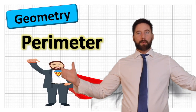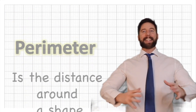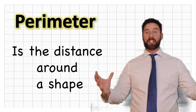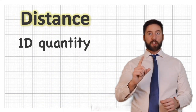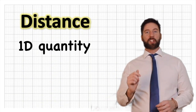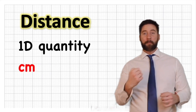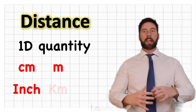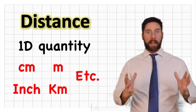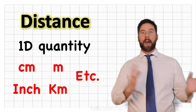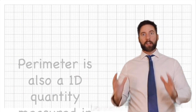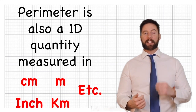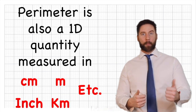So what is perimeter? Well, perimeter is the distance around a shape. Distance is a one-dimensional quantity measured in things like centimetres, metres, inches, and kilometres. So therefore, perimeter is also a 1D quantity measured in units like centimetres, metres, and kilometres.